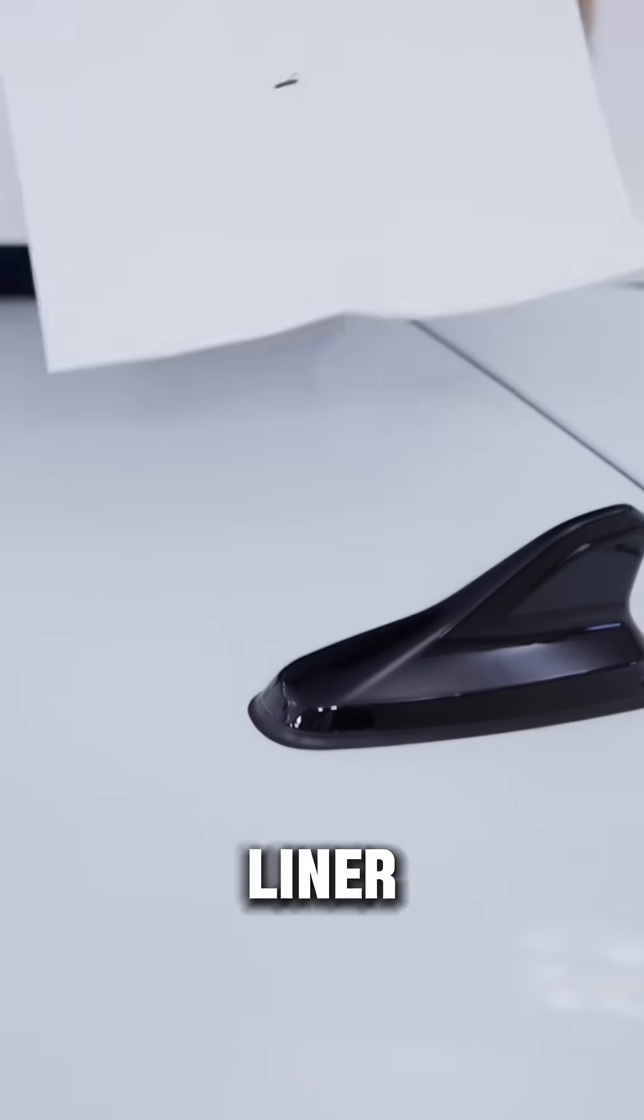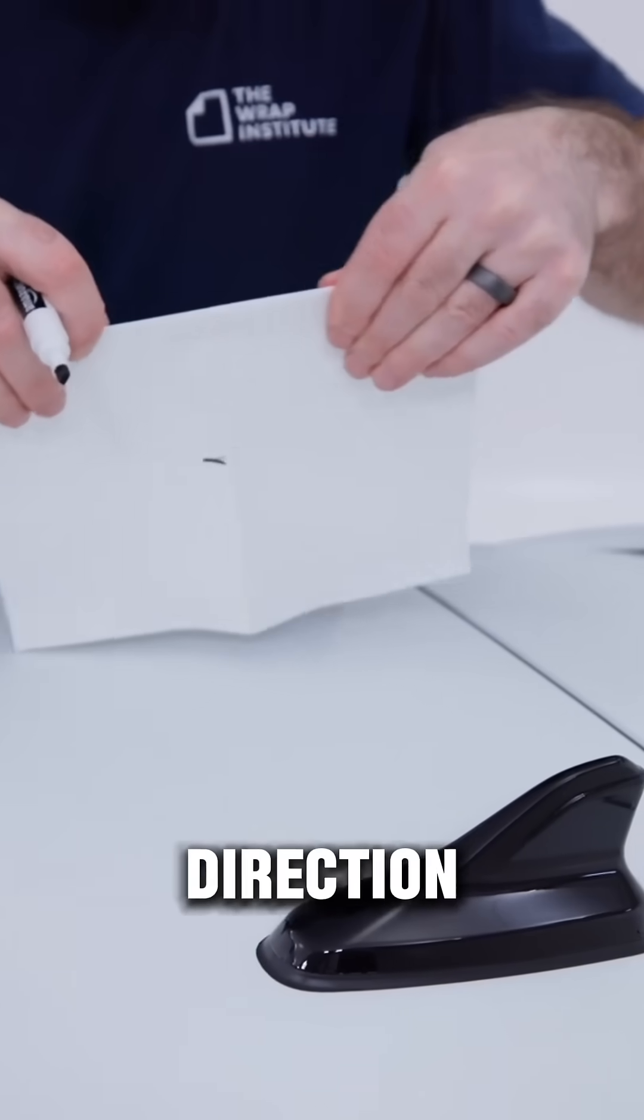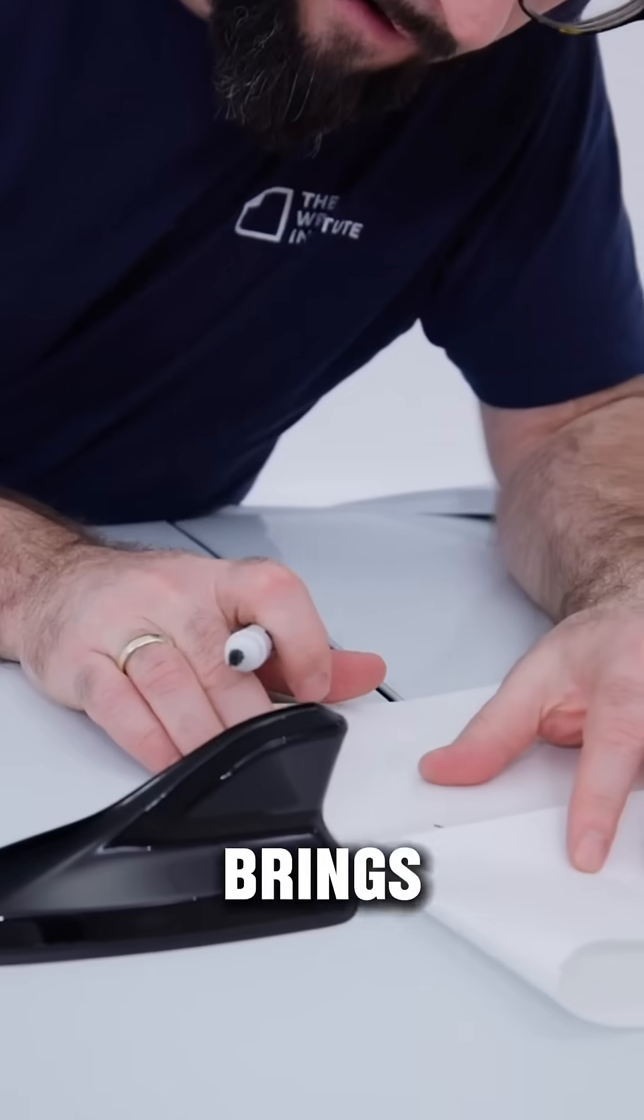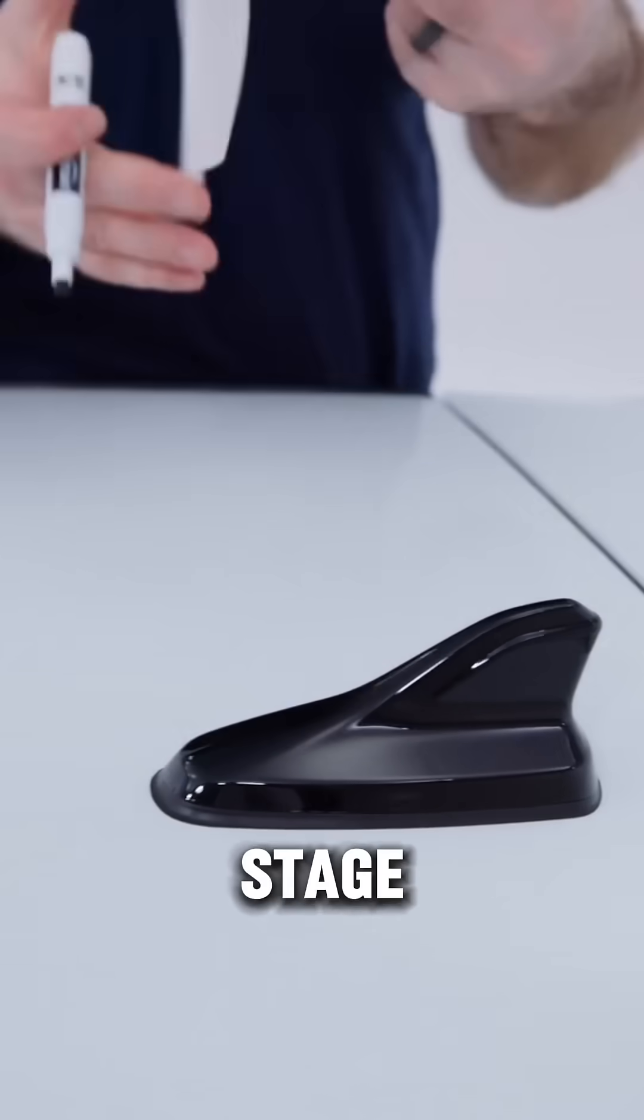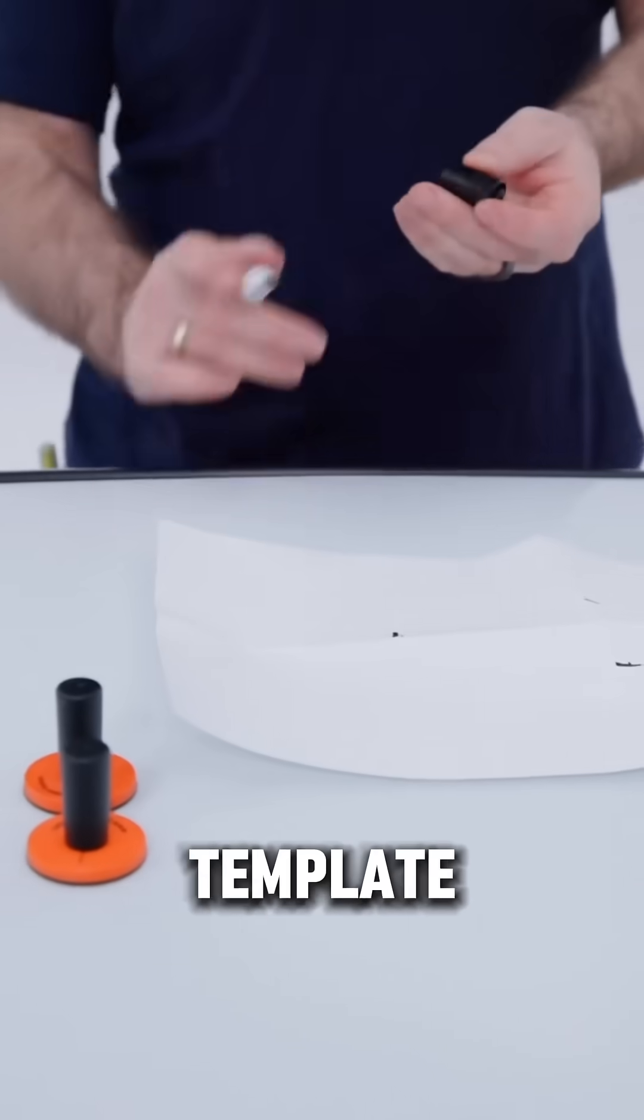So he opens up the liner and folds it in the opposite direction. Once that's creased, brings it to the back of the antenna and marks the right and marks the left. So this is stage one of creating template Reiner style.